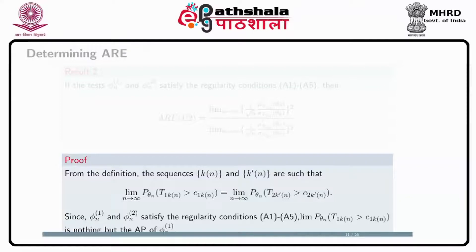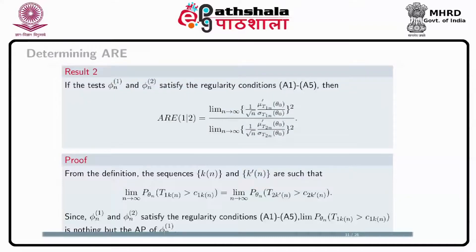The definition of ARE as given is not enough to compare in practice; we need an equivalent expression so that efficiency can be evaluated easily. If tests phi_{n1} and phi_{n2} satisfy the regularity conditions A1 to A5, then the ARE of test 1 relative to test 2 is given by the limit as n tends to infinity of (1/root(n)) times mu prime(T_{1n}, theta_n) divided by sigma(T_n, theta naught), whole squared, divided by the corresponding limit for test 2.